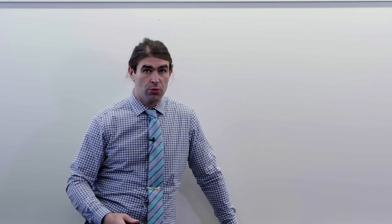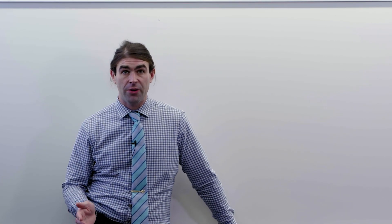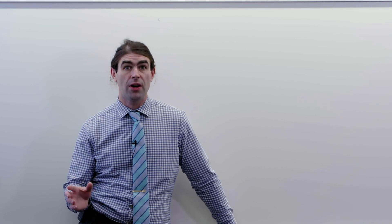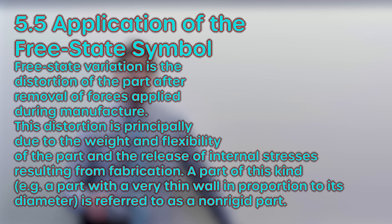So what exactly is free state variation in the unrestrained condition? Well it refers you over to the section on form tolerances and basically says non-rigid parts. It gives a subjective description for non-rigid parts, something with a thin wall compared to its diameter or something that could change after manufacturing.